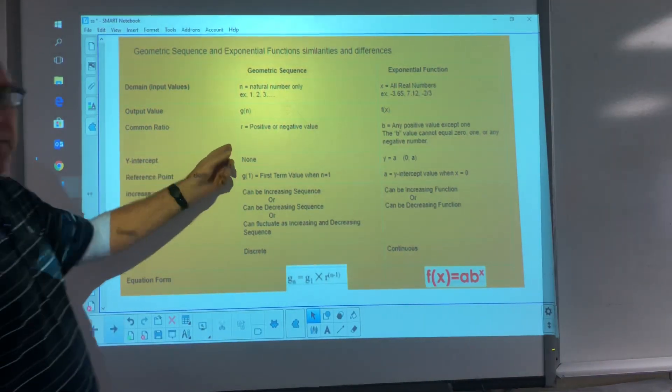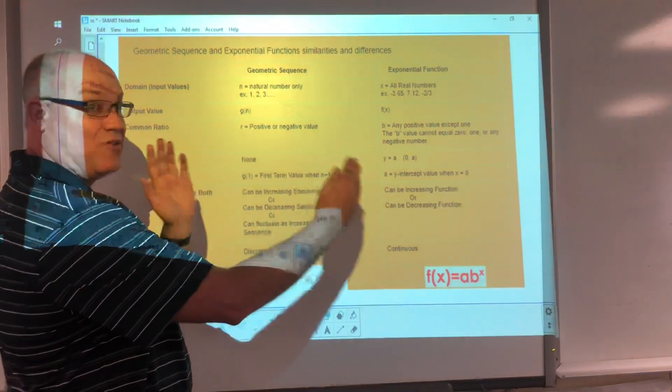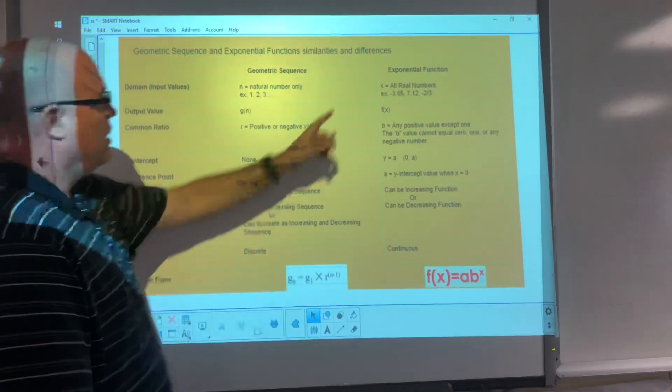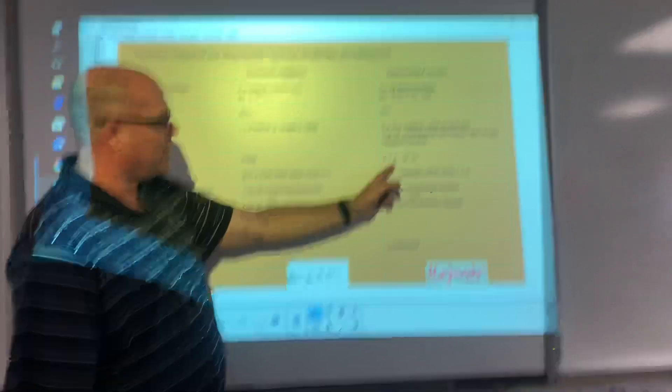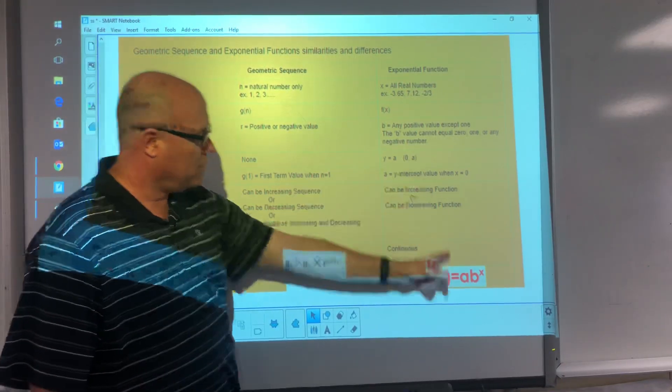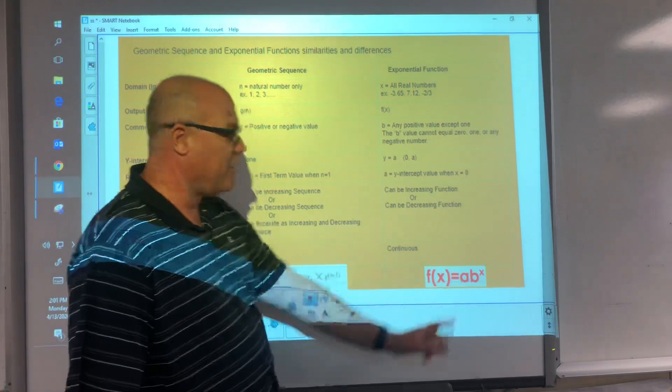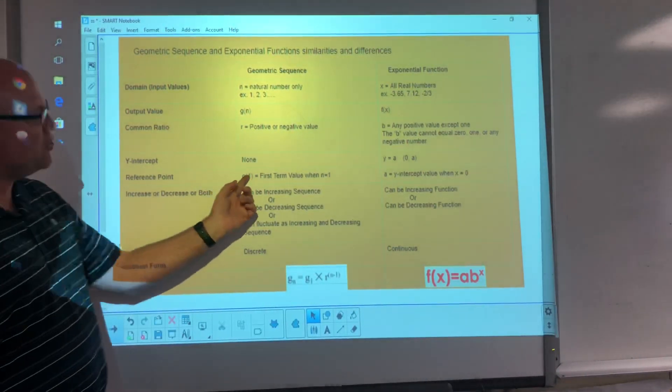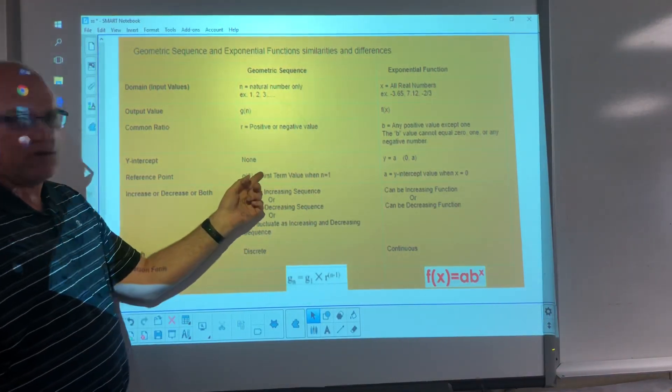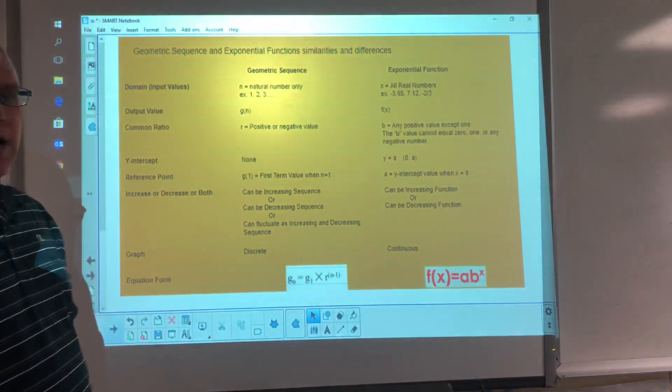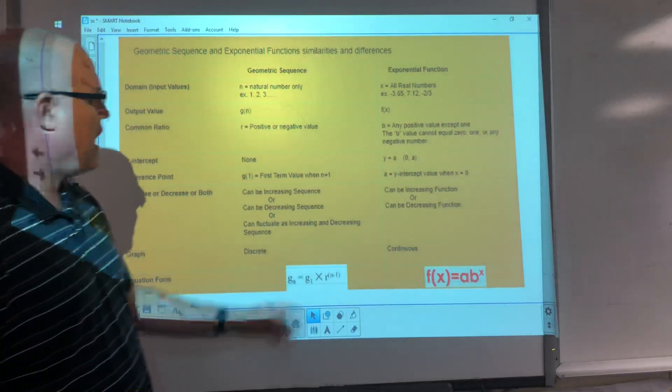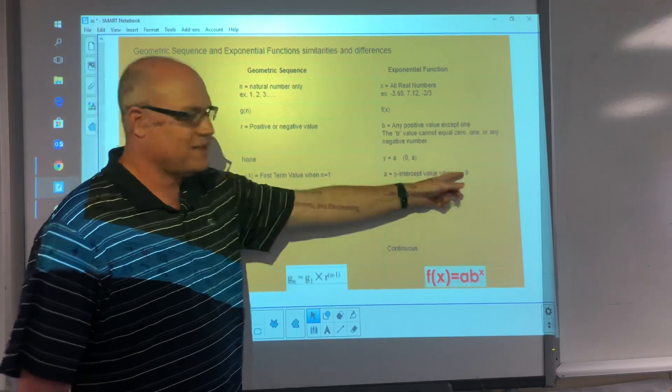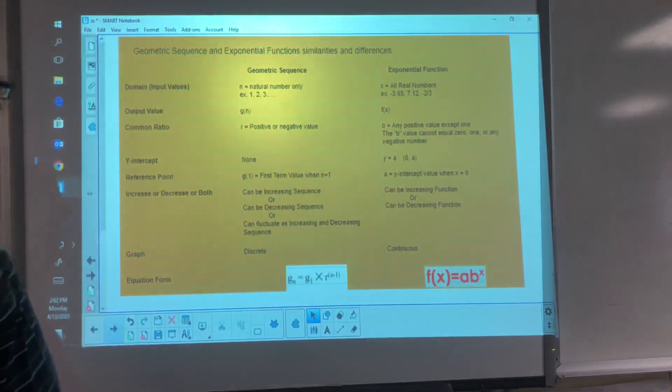Y-intercept. There is no y-intercept for geometric sequence. Right. It starts at n is one. So it doesn't start on the y-axis, if you will. Where exponential does have a y-intercept, it will always be zero, comma, a. Whatever this value is, that will be the y-intercept. All right. Reference point. Again, the first term value, n equals one. g of one is usually a good reference point we use for a geometric sequence. And our reference point for exponential functions, a lot of it's going to be the y-intercept, which is when x is zero, it's going to be the a value.